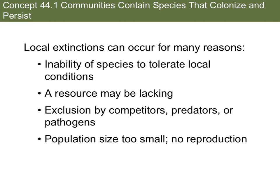Local extinctions can occur because of an inability of species to tolerate local conditions. Maybe the amount of food or habitat has changed, a resource like water or food may be lacking, there may not be enough sunlight, or there may be exclusion by competitors, predators, or pathogens. Also, the population size may be too small — not enough reproduction, or too much inbreeding reduces genetic diversity, making organisms more susceptible to disease.